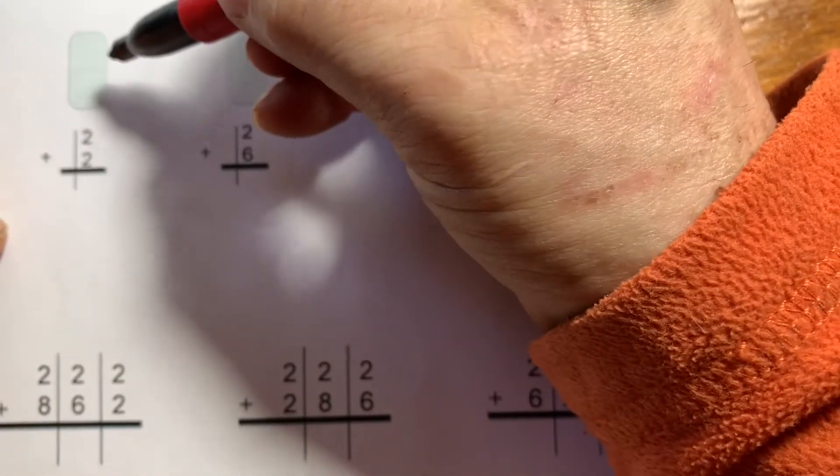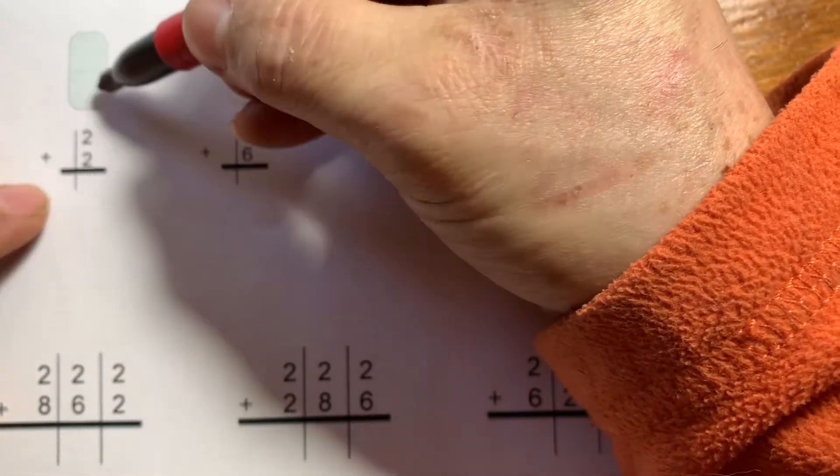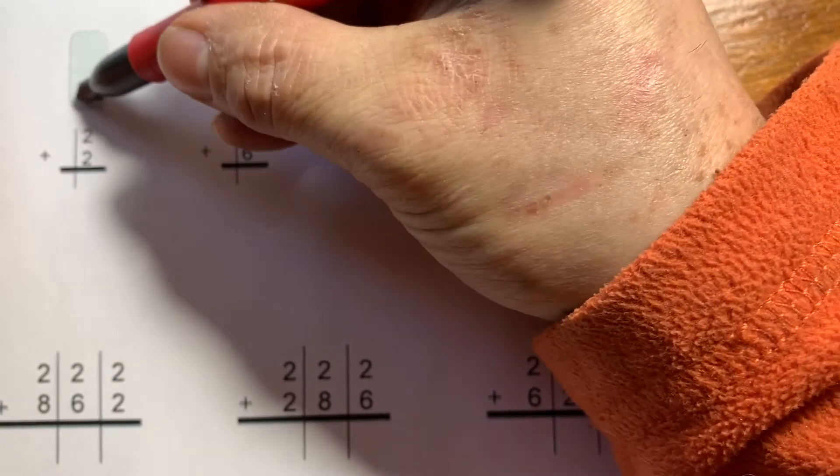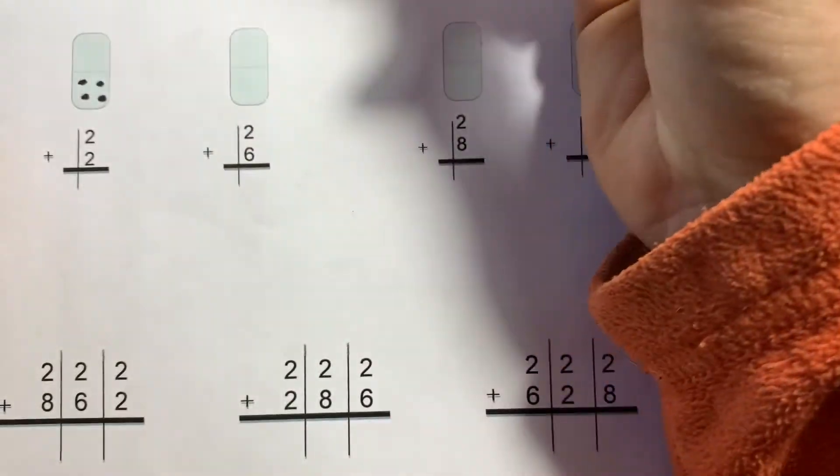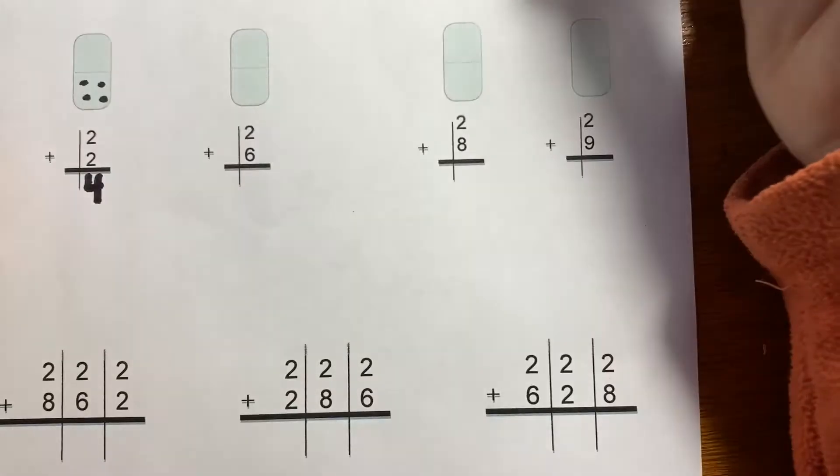Let's start here. Two plus two. Diagram the larger. They're both the same. Two plus two more. The sum will be four.